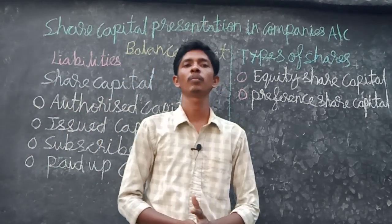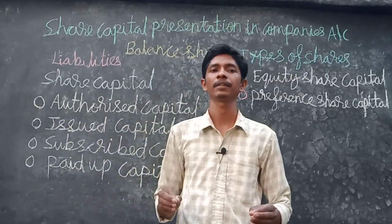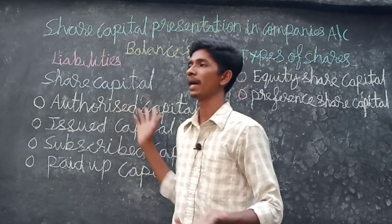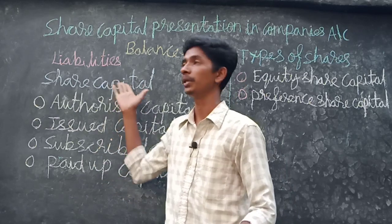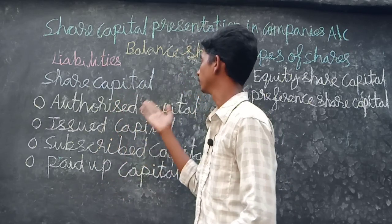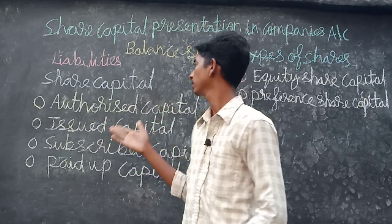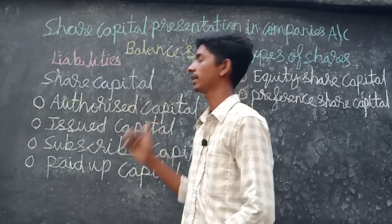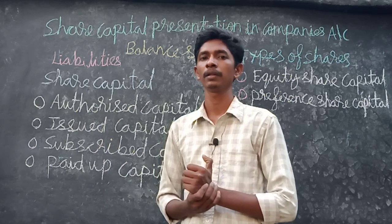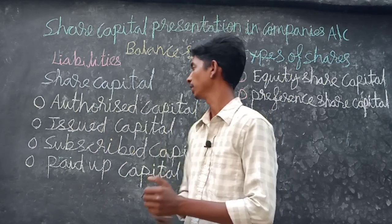Welcome everybody. Today I'll explain the share presentation in a company's account balance sheet — liabilities, share capital, four types of shares, and the issued method. Authorized share capital means you get permission from SEBI. For example, if you can issue one lakh rupees worth of shares, that means you can issue 50,000 shares.